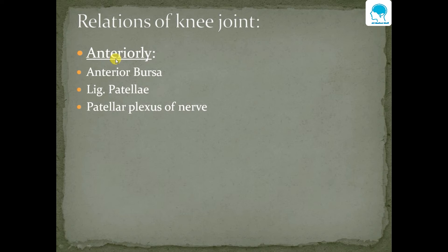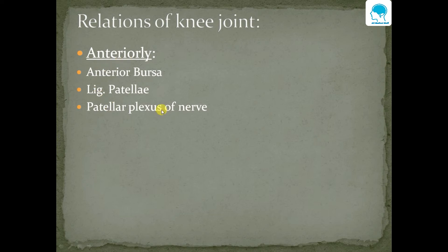Relations of the knee joint — on the anterior aspect there are three structures: patella, bursa, ligament, and patellar flexors of the nerve. These are simple to remember so we don't need any mnemonic. We will move forward to posterior relations.